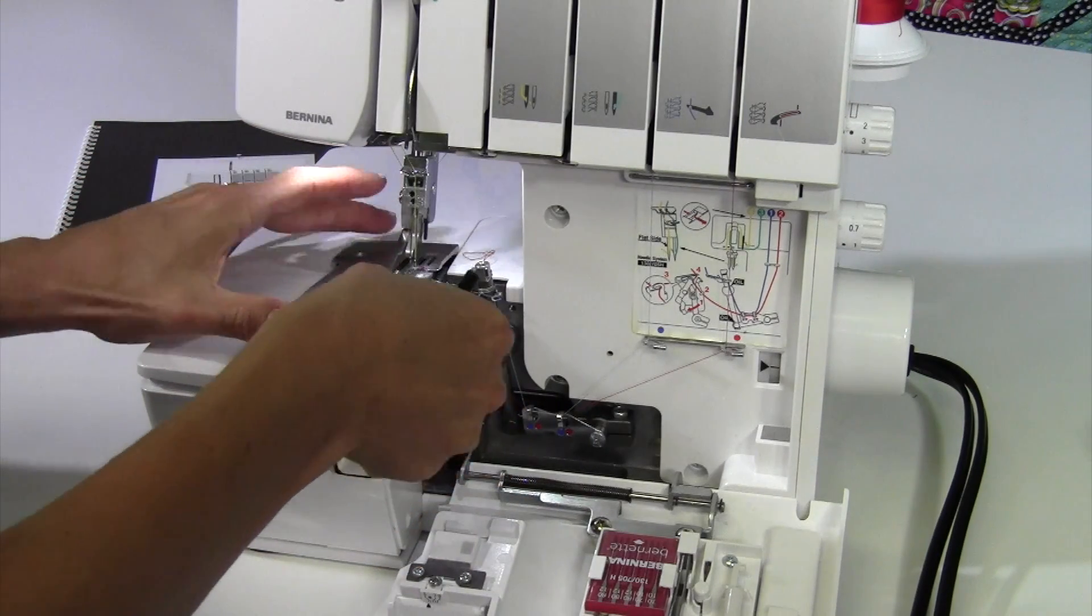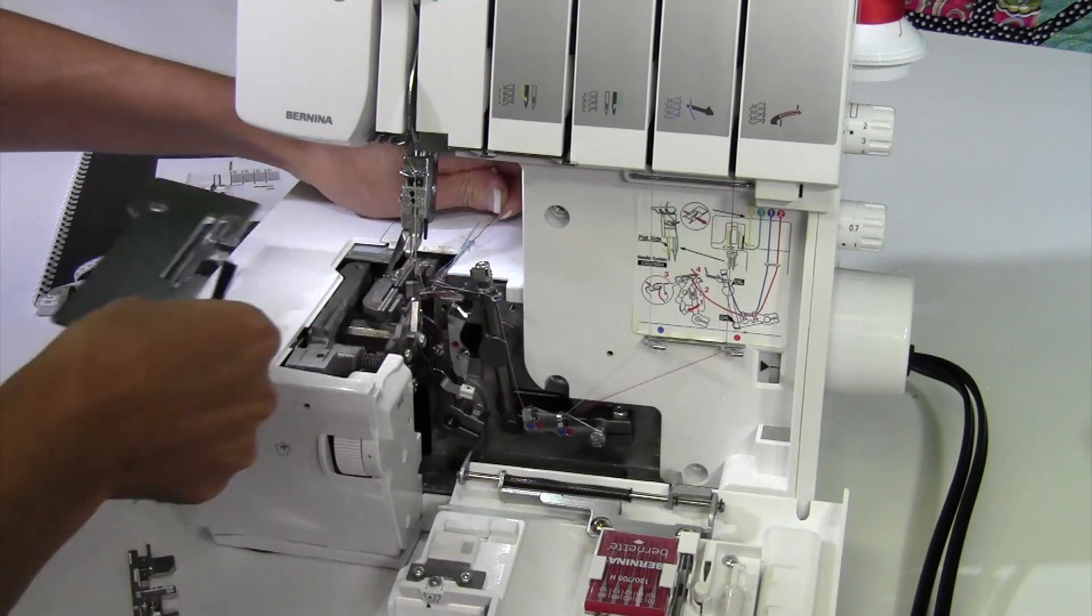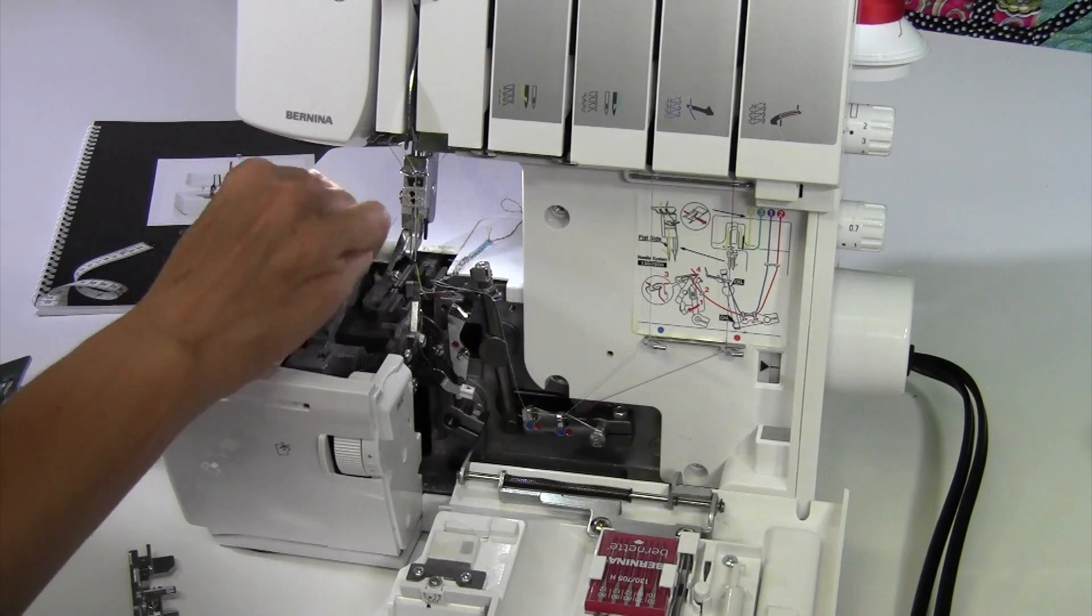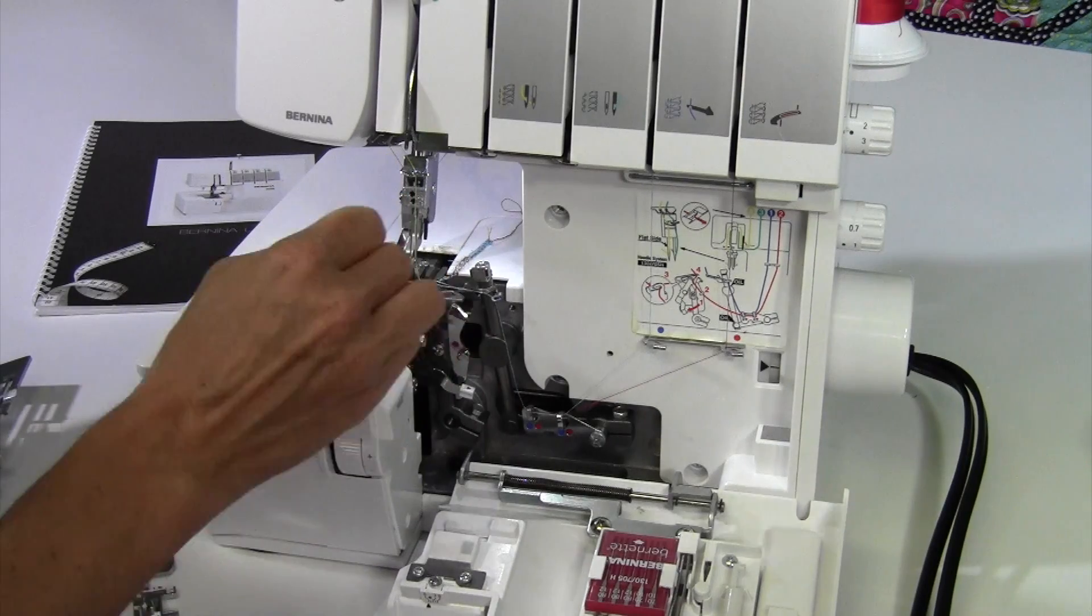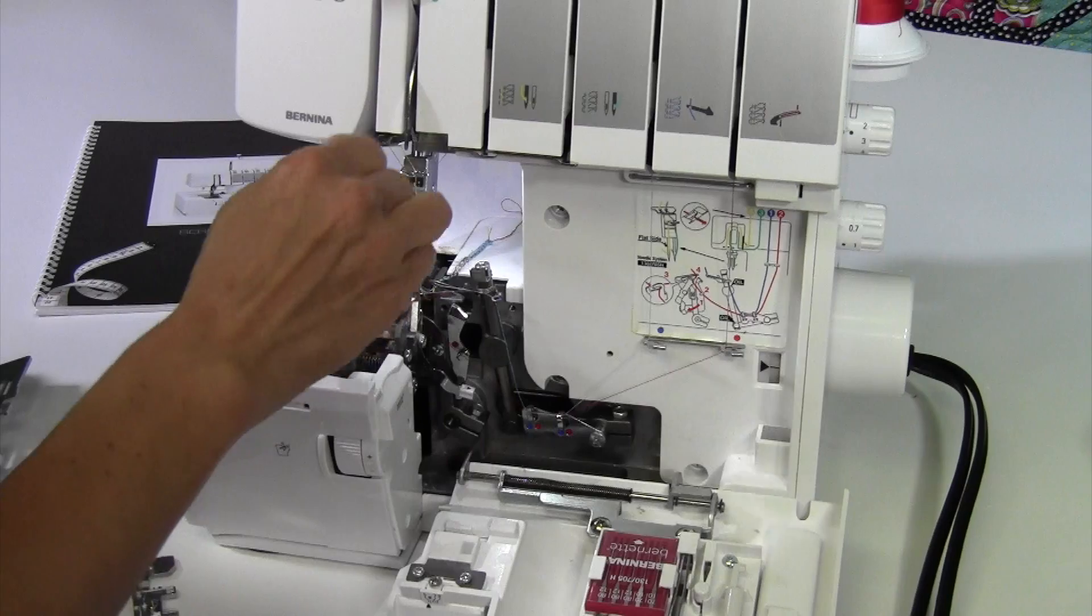Then here, this is the throat plate, so we can pull that out. I've got some stitches still on there. That's okay. I can see that I'm getting some lint down in this area. One thing that you don't want to do is blow into the serger. You don't want to actually get this lint further in. Definitely skip the can there.